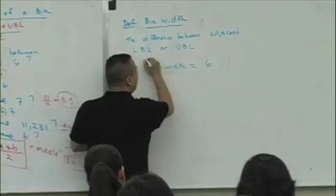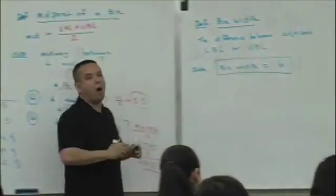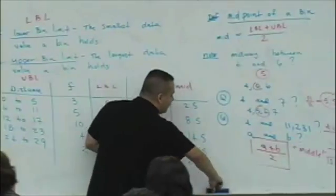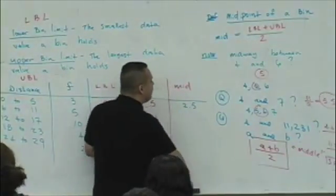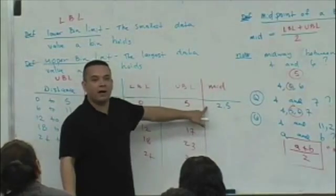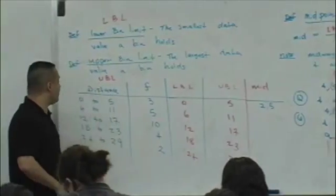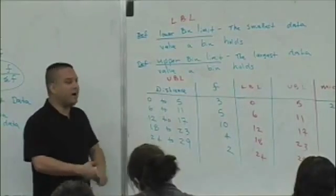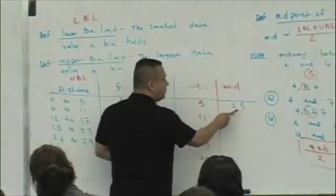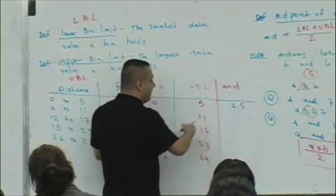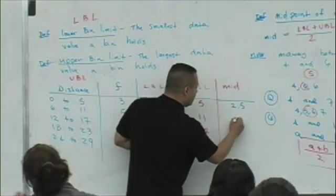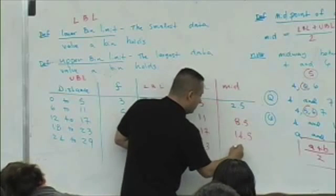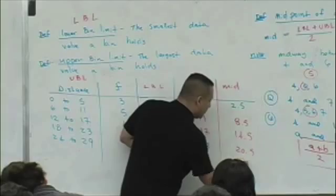Now, why you may care about this is this way. If the moment you first located the first midpoint value of 2.5, because the bin width is six, the difference between these two values is six, I can simply start adding six. 2.5 plus six is 8.5, 14.5, 20.5, 26.5.